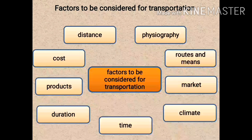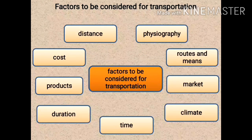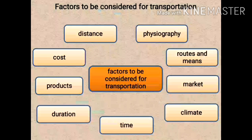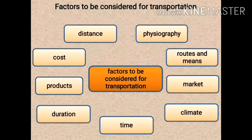Let us begin with the first important factor: physiography. Physiography means physical condition — whether the region is mountainous, has many rivers, experiences snowfall, or is a plateau or plain. Transport facilities develop well in plains, while areas with higher relief or mountainous terrain make it difficult to set up a transportation system. A region becomes devoid of transportation routes if its physiography is not suitable for the construction of those routes, whether railway or roadway.